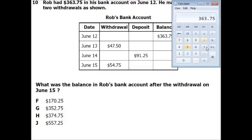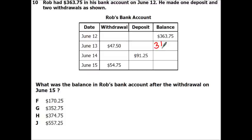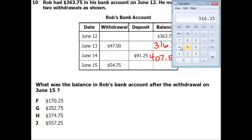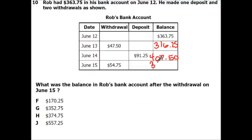So right now he's got $316.25. Since I made a deposit now, I'm going to add that. So this is going to be 50 cents. One plus six is seven. That's going to be zero. So now I've got $407.50. And then I'm going to take away the $54.75. So he's got $352.75. So $352.75. It's right there.